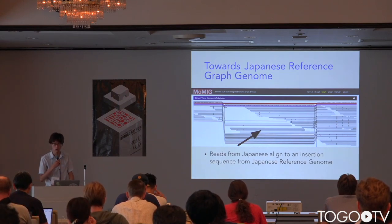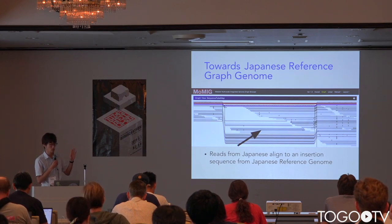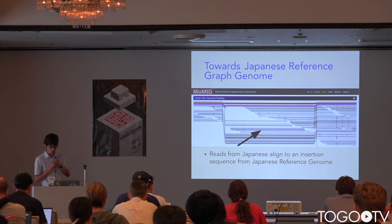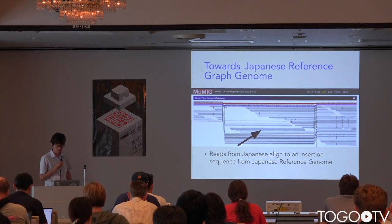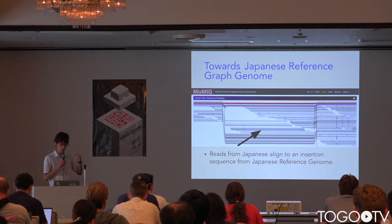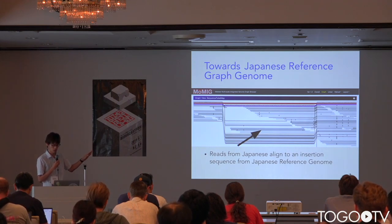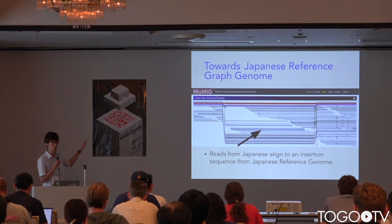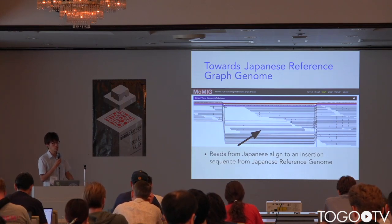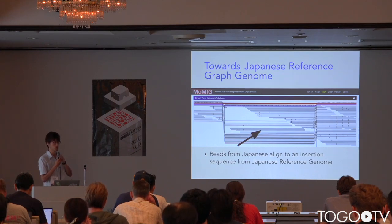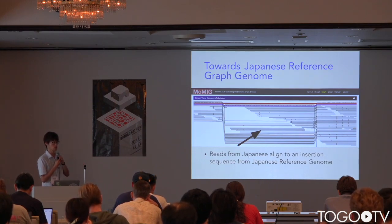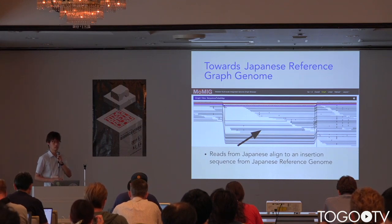I created a draft version of a Japanese reference genome graph using the Japanese reference genome and GRCh38. This graph includes the GRCh38 paths and the Japanese reference genome paths. The node in the center is an insertion sequence identified by Tohoku Medical Megabank. When reads from a Japanese sample are aligned, some reads align to this insertion sequence and we found SNPs on it. Some of these SNPs may be missed if a single reference genome is used, which is the reason why graph genomes should be used.